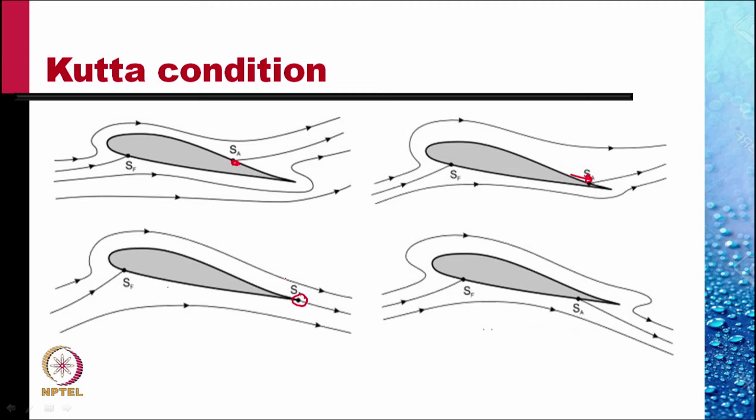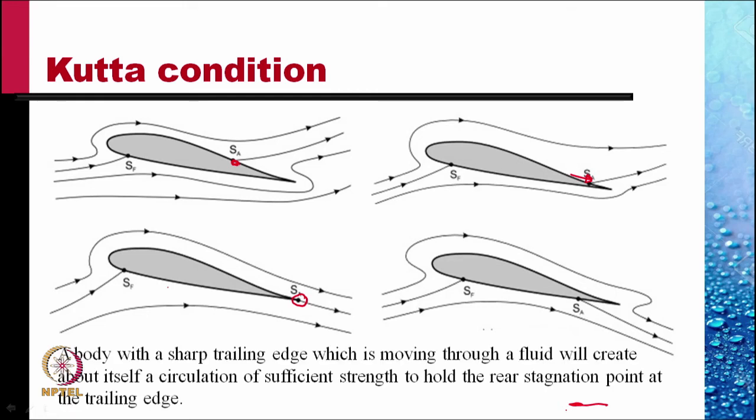If I add more circulation, this stagnation point would move down the bottom surface. A body with a sharp trailing edge which is moving through a fluid will create about itself a circulation of sufficient strength to hold the rear stagnation point at the trailing edge. This is the Kutta condition.